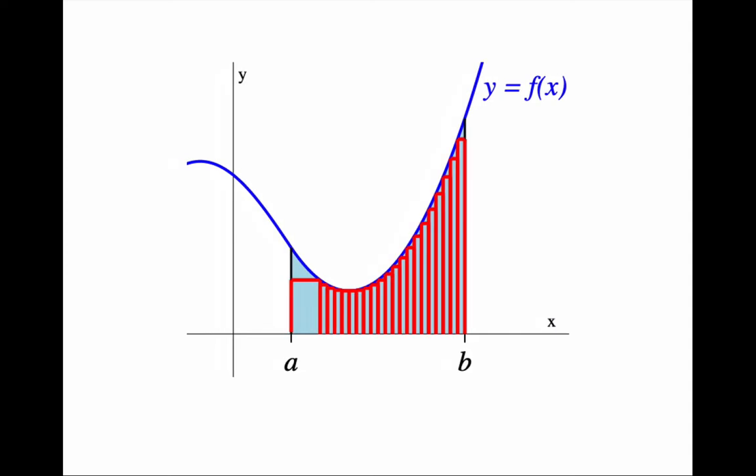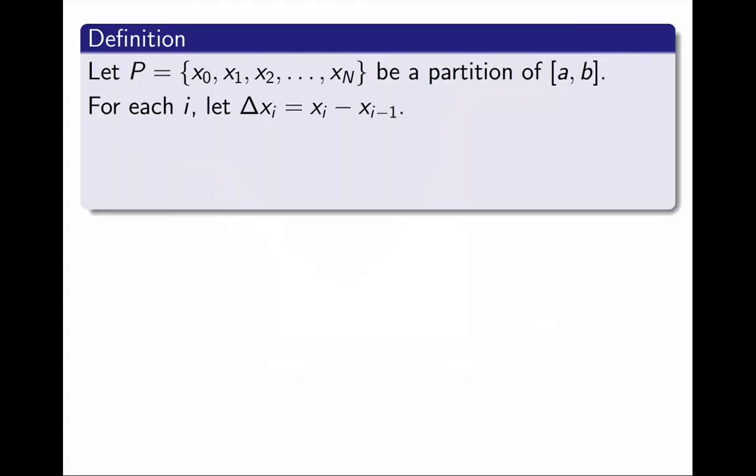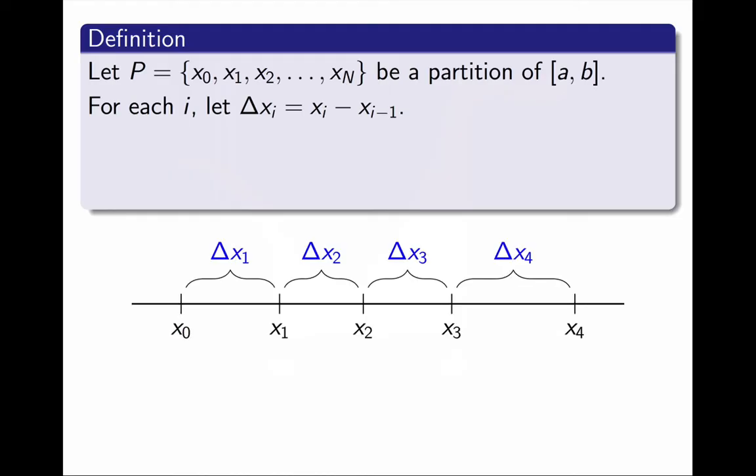This suggests the following definition. Given a partition P with points x₀ through xₙ, I am calling Δxᵢ the width of the i-th subinterval. For example, here is a partition with 5 points, 4 subintervals, with widths Δx₁, Δx₂, Δx₃ and Δx₄.